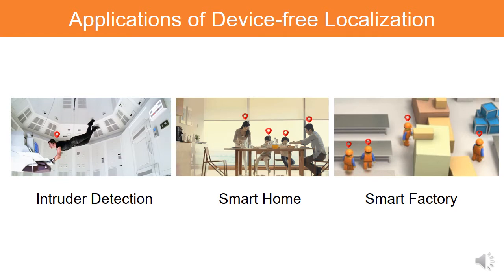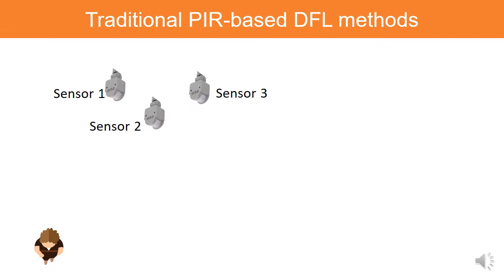The technique of device-free localization has attracted much attention because it does not require the target to wear any devices. In practice, the technique has been widely utilized in many fields such as intruder detection, smart home, and smart factory. Recently, more and more researchers start to utilize PIR sensors for device-free localization, because PIR sensors can work in dark and private environments and have low cost and low power consumption.